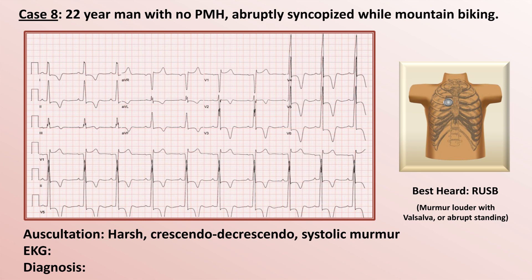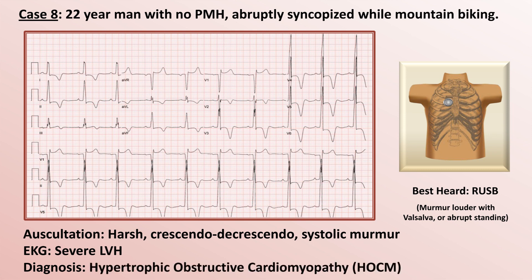Instead, this EKG is an example of profound LVH. While it might seem possible for severe aortic stenosis to cause both that murmur and LVH, it would be exceptionally rare to see AS of this severity in someone so young. Instead, this is an example of hypertrophic obstructive cardiomyopathy.